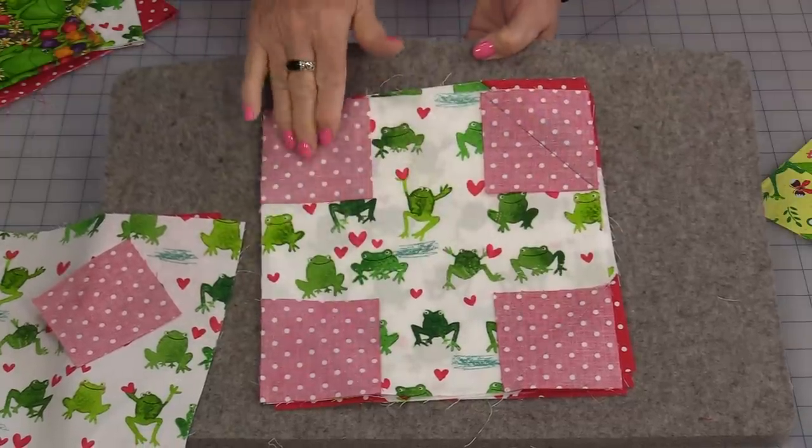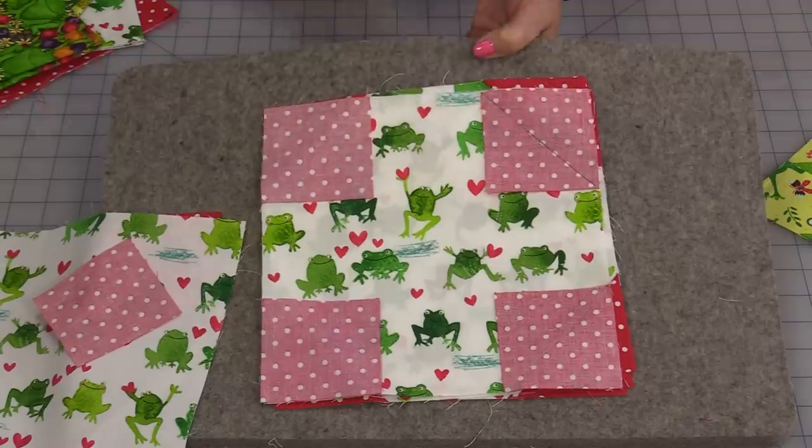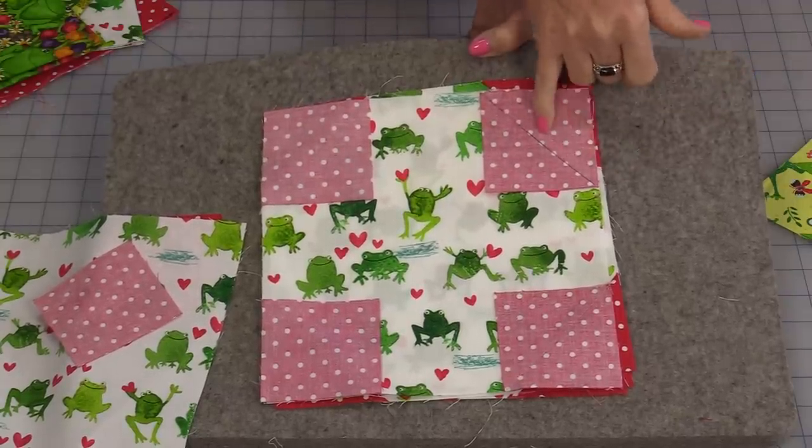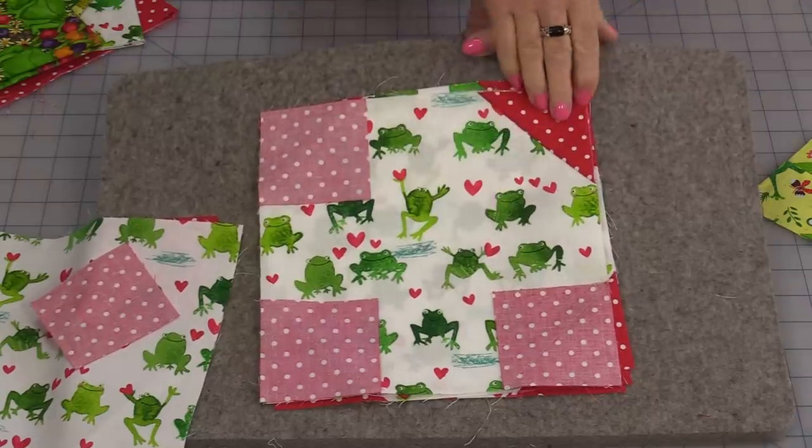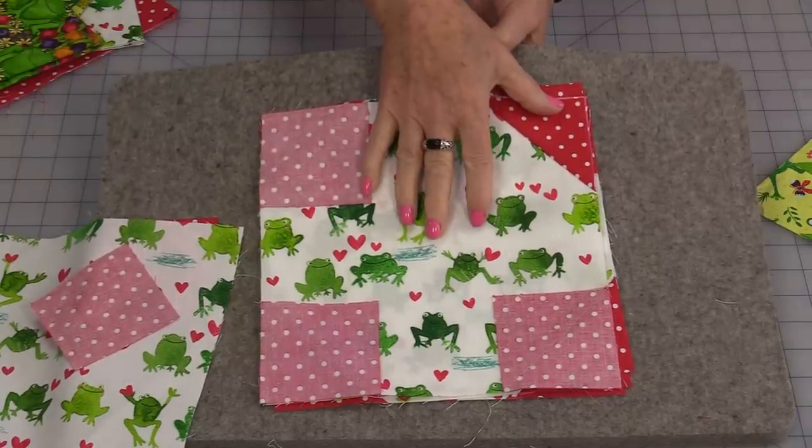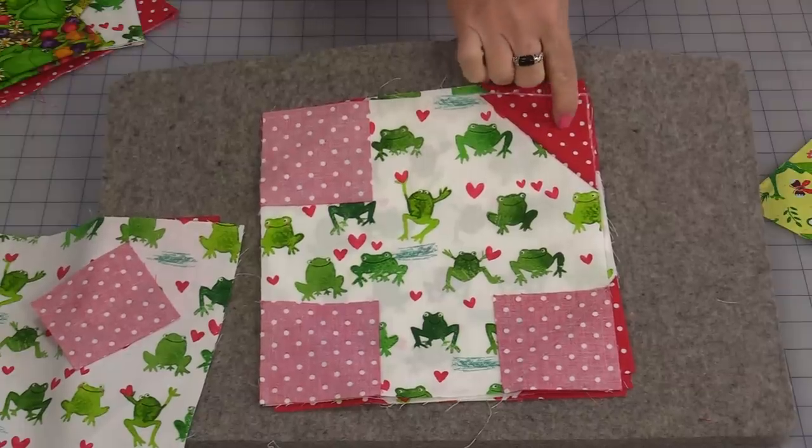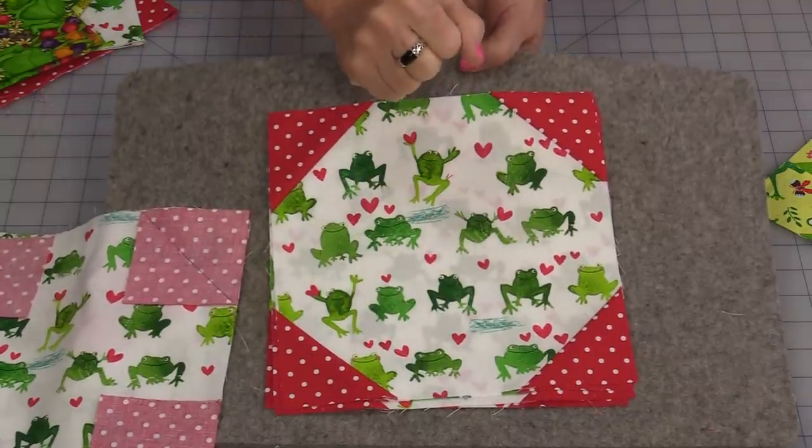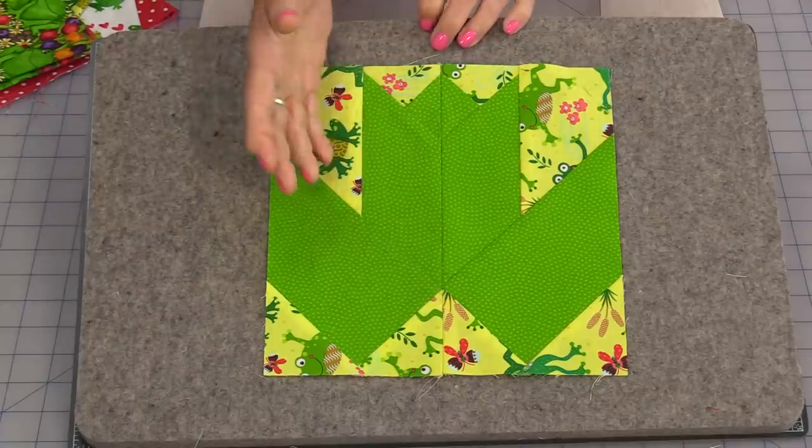All four squares will need to be stitched from corner to corner. Then you can trim off a little bit of this corner. Leave a quarter-inch seam allowance. When that block folds back you still have the original 9-inch square with these little corner pieces. We need six of these.